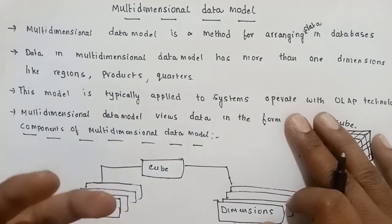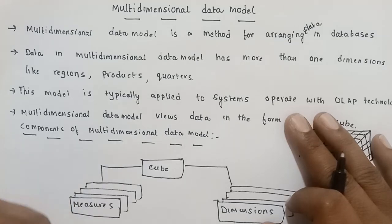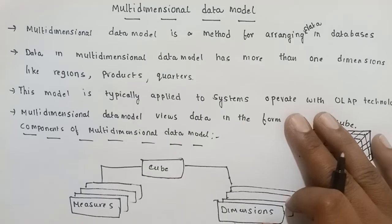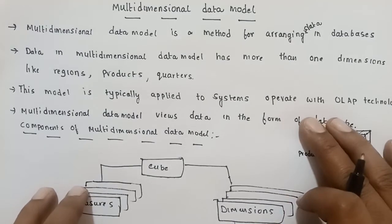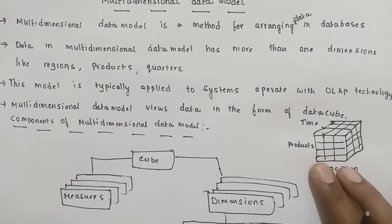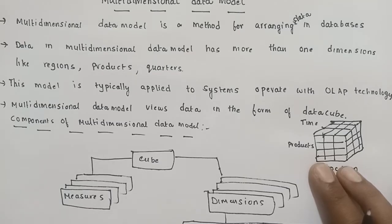It can have two dimensions and more. A multi-dimensional data model can have four dimensions — products, quarters, or more than one dimension. This model is typically applied to systems that operate with OLAP technologies, such as OLAP servers.